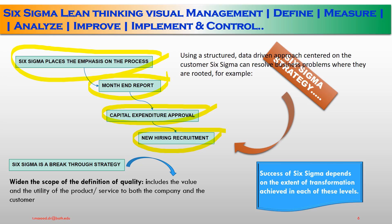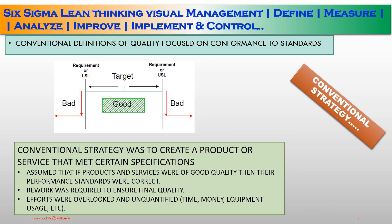The success of Six Sigma depends on the extent of transformation achieved at each level. Now, the conventional strategy. Conventional definitions of quality focused on conformance to standard. As shown here, there is an LSL — lower specification limit — and a USL — upper specification limit. If I am between both limits, I am good. If I am crossing the upper specification limit or below the lower specification limit, I am violating the boundaries. As long as I am between LSL and USL, I am meeting requirements. This is my conventional approach.